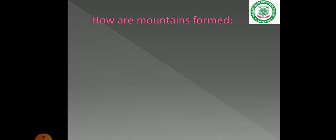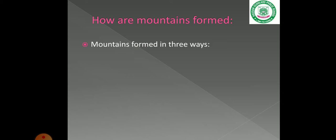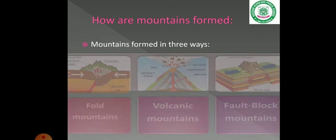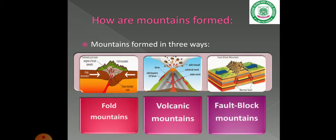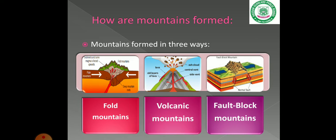Next is: how are mountains formed? Mountains are formed in three ways. The first one is fold mountains, the second is volcanic mountains, and the third is fault-block mountains.